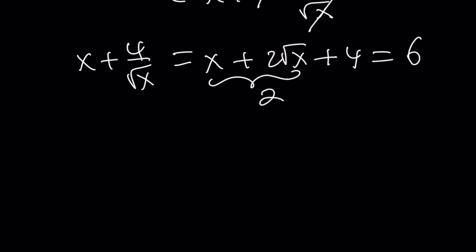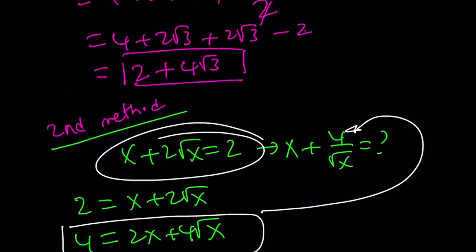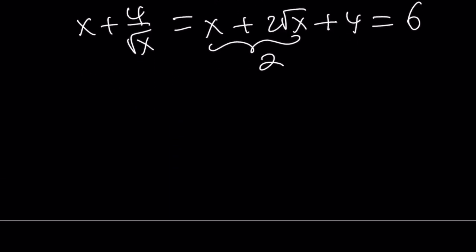Wait a minute. Why are the answers different? Okay. Let's go back to the first method. And with the first method, we got 2 plus 4 root 3. But now we got 6. Is that possible? Here's the reason why they're different.